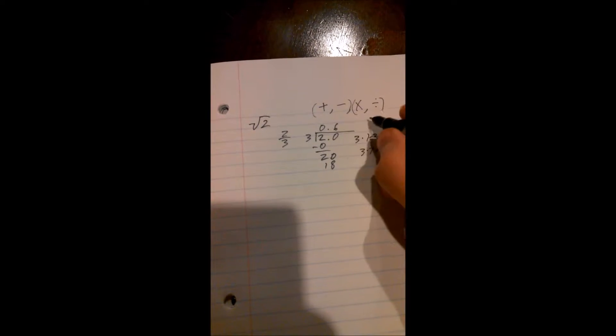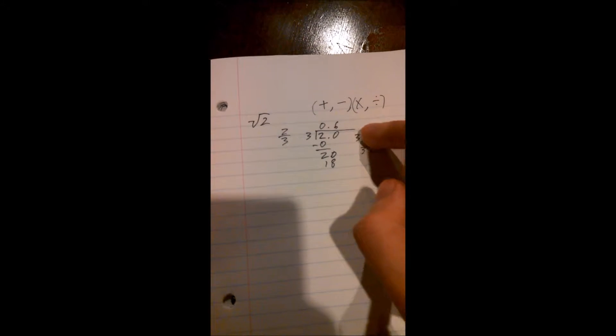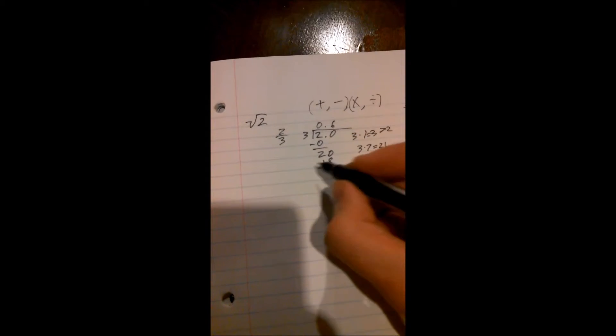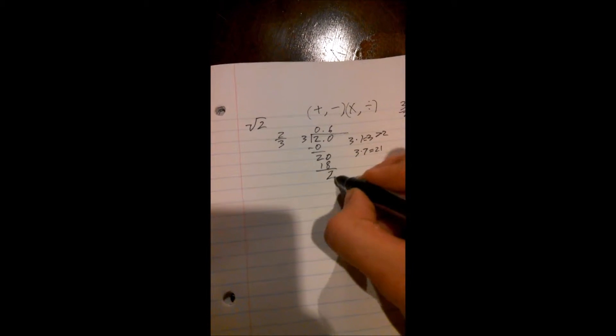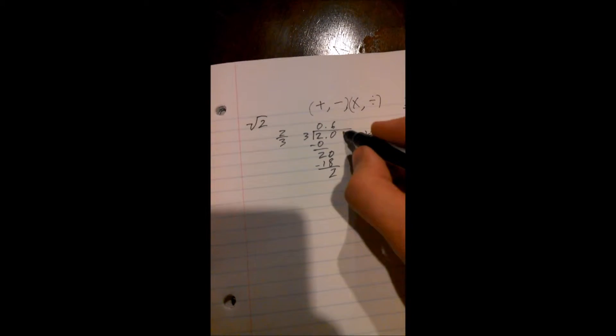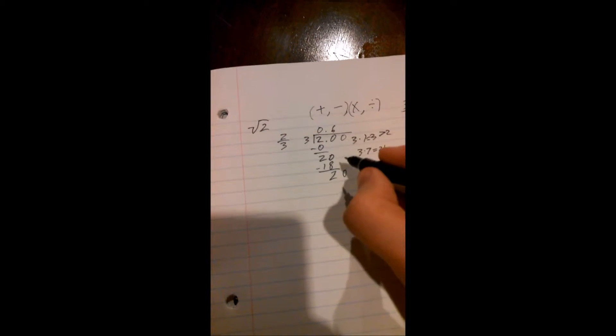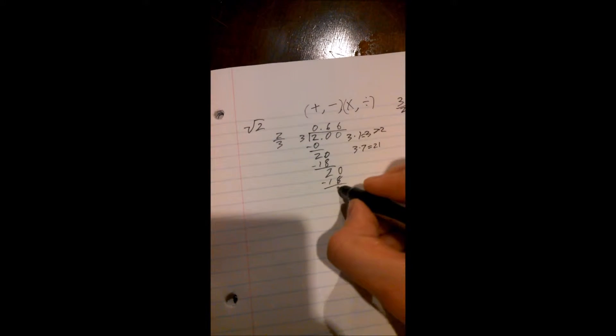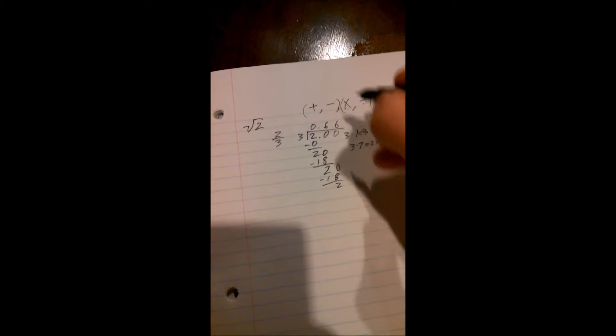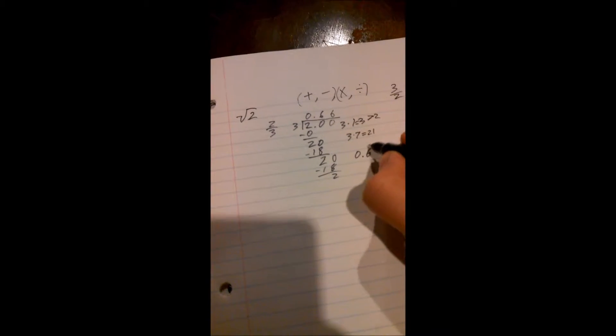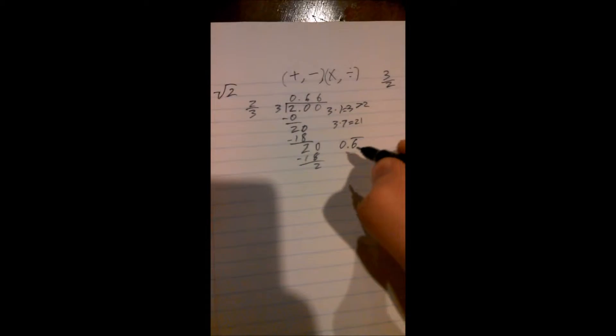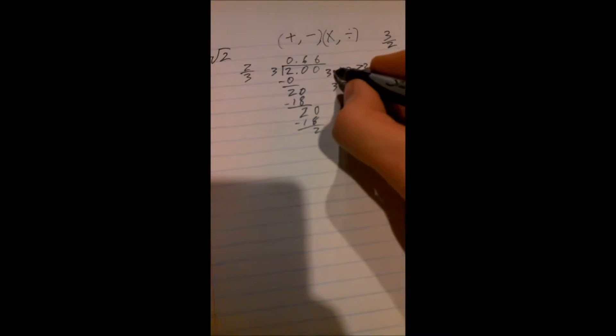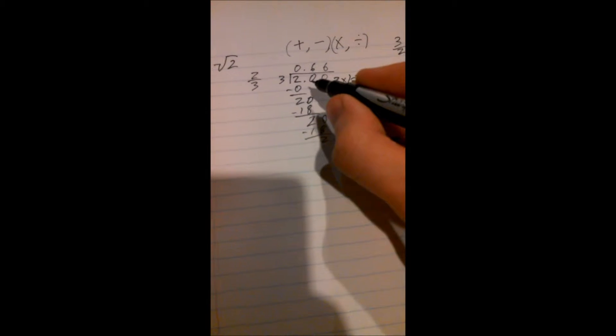So the next one down would be 6. 6 times 3 is 18. 20 minus 18 is 2. Then we bring down the next decimal, another 0, and that gives us 20 again. We plug in another 6, and that gives us another 18. And that repeats forever. So we have a sequence of 6 repeating, and that's the notation we use for that. So we're using multiplication here to find division.